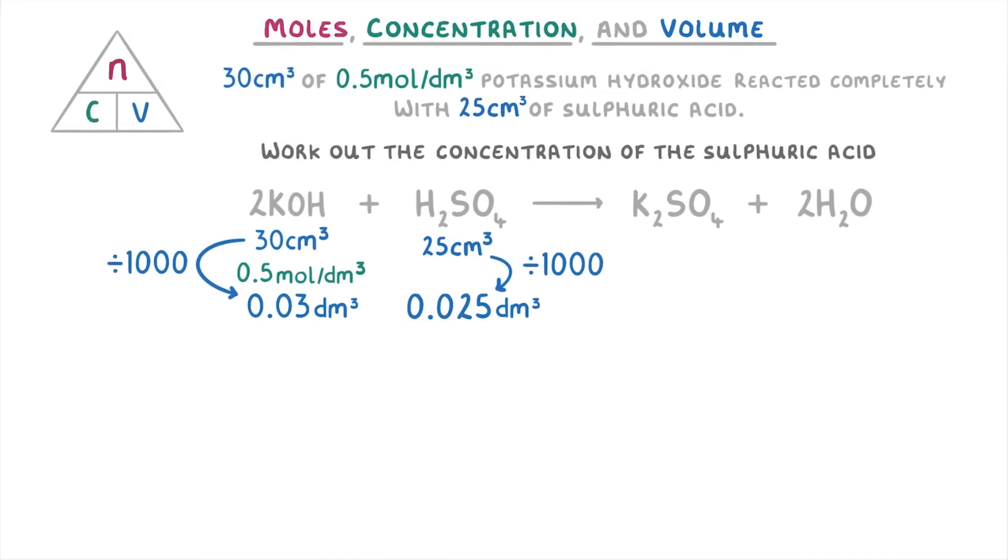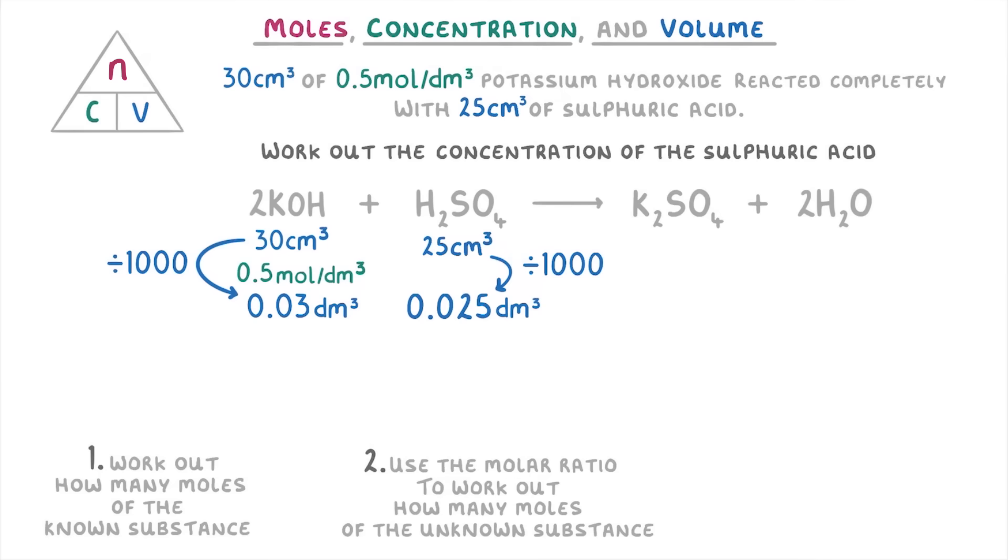Now, the basic idea with all of these types of questions is first, to work out how many moles of the known substance we have. Then second, use the molar ratio to work out how many moles of the unknown substance we have. And finally, use that number of moles to work out the concentration of the unknown substance.